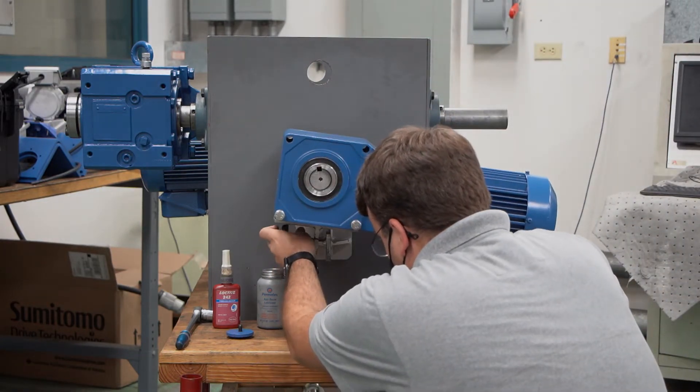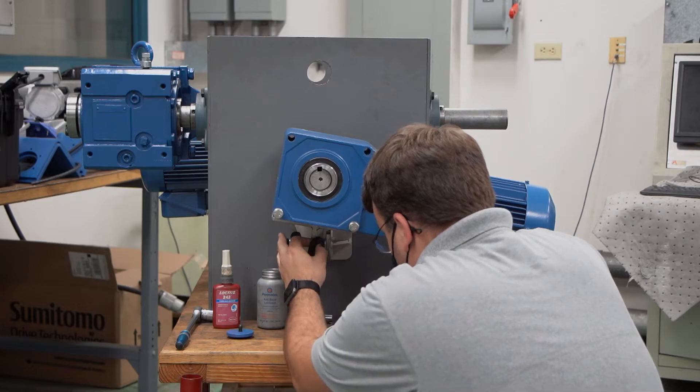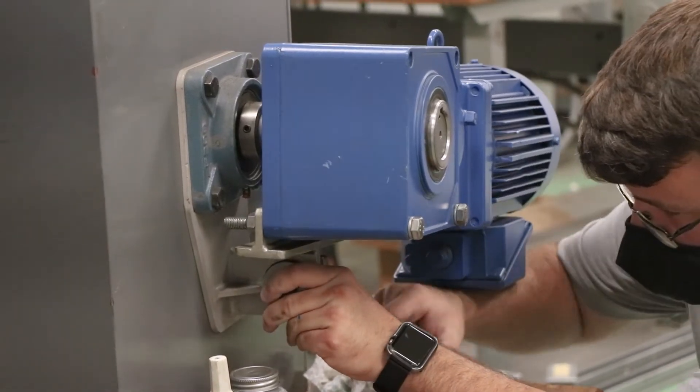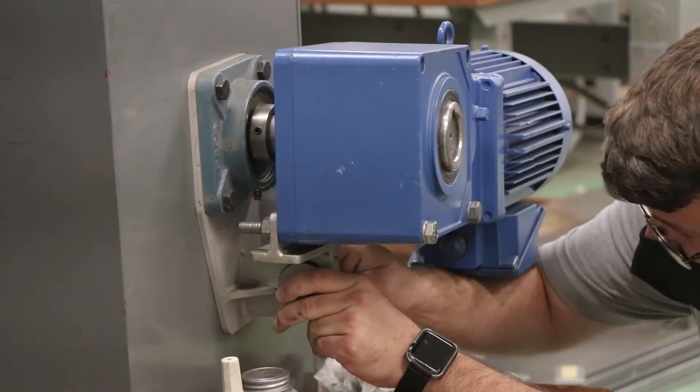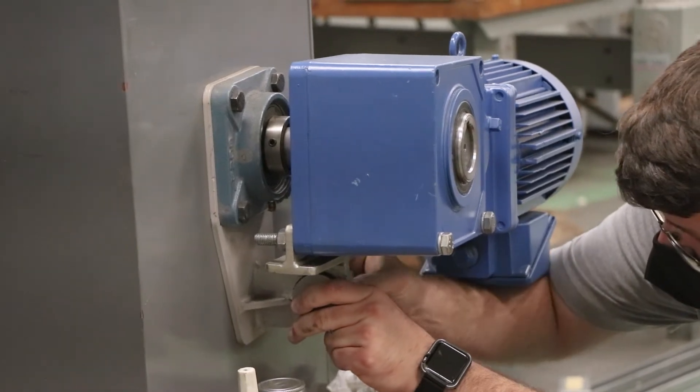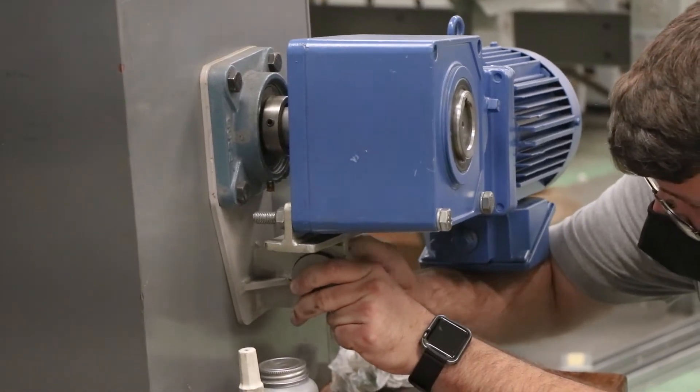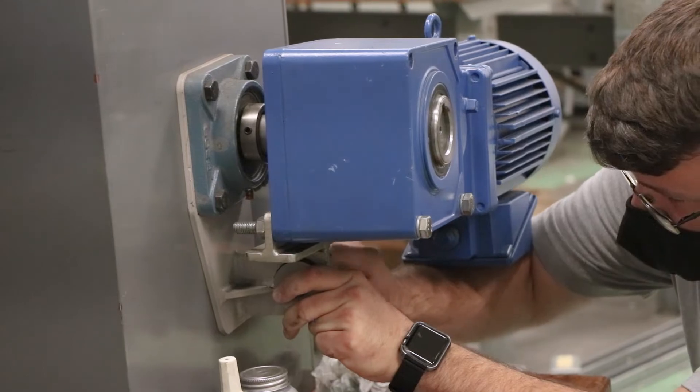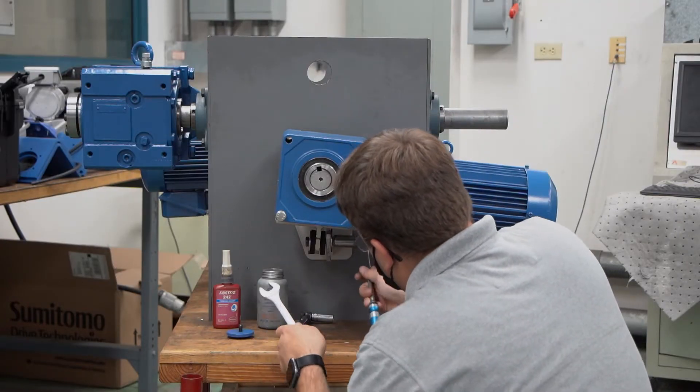For torque arm mounting, we've made a couple other videos so reference those. But the key here is to always remember you don't want that torque arm bolt to be too tight. You want to make sure the reducer can float with any run out of the shaft. But like I say, we did cover that in some other videos, so definitely look those up on our YouTube channel.